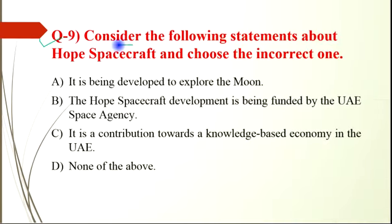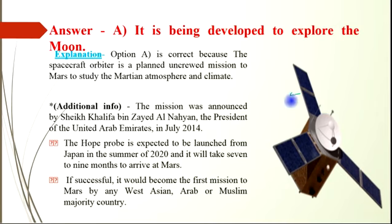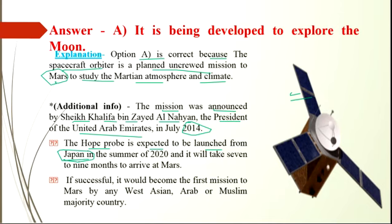Question number 9: consider the following statements about the Hope spacecraft and choose the incorrect one. Option A is incorrect — it states the spacecraft is being developed to explore the moon, which is wrong. Options B, C, and D are correct. The Hope spacecraft is a planned uncrewed mission to study the Martian atmosphere and climate. The mission was announced by Sheikh Khalifa bin Zayed Al Nahyan, President of UAE, in July 2014. The Hope Probe is expected to be launched from Japan in the summer of 2020, and will take 7 to 9 months to arrive at Mars. If successful, it would become the first mission to Mars by any West Asian, Arab, or Muslim-majority country.